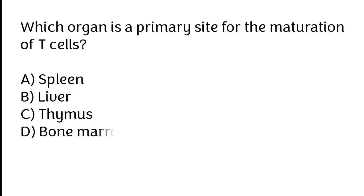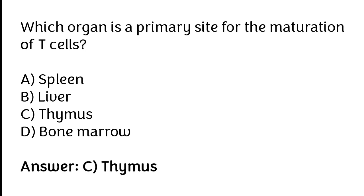Which organ is a primary site for the maturation of T-cells? Spleen, liver, thymus, bone marrow. The correct answer is option C. The thymus organ is a primary site for the maturation of T-cells.